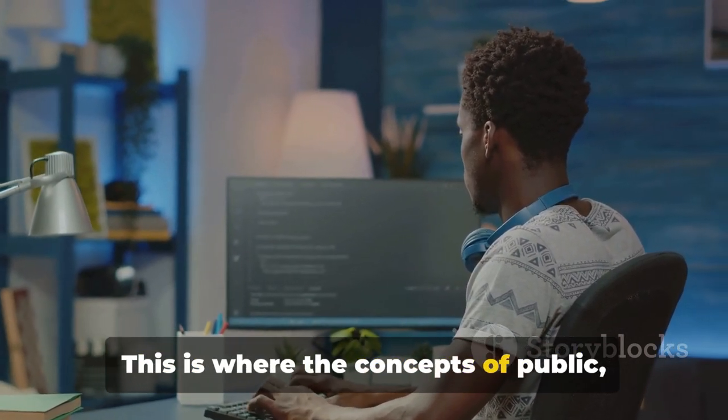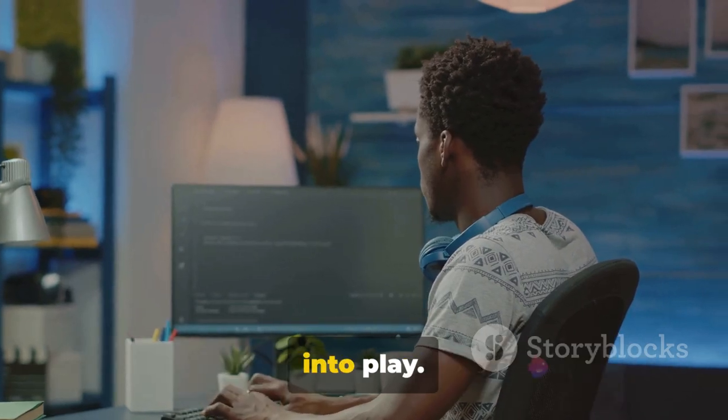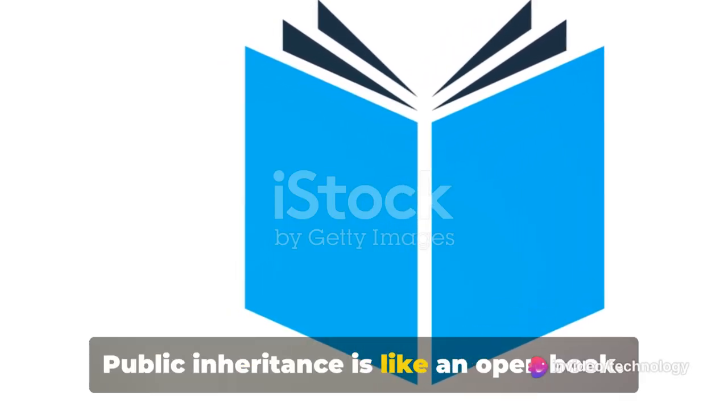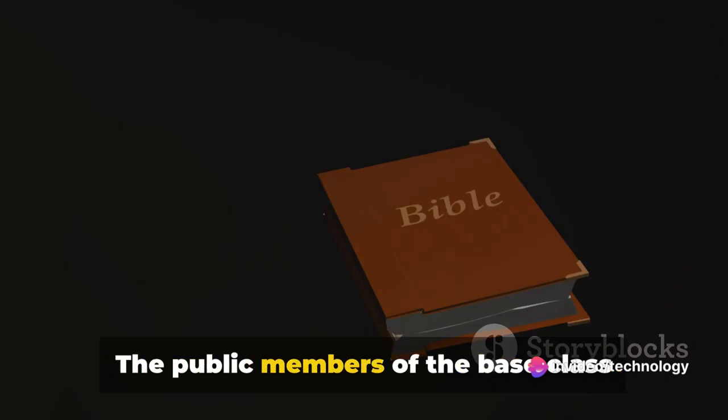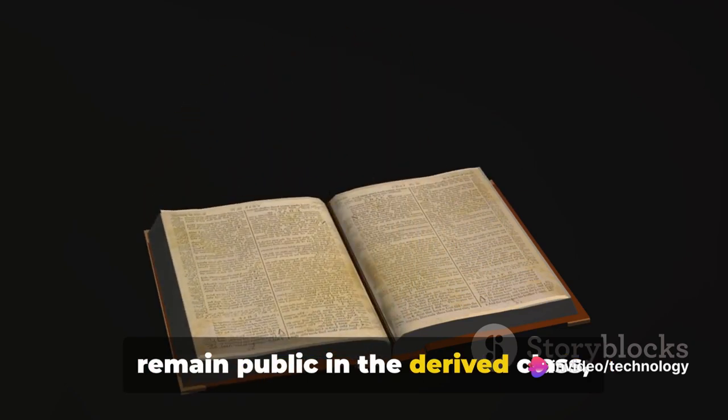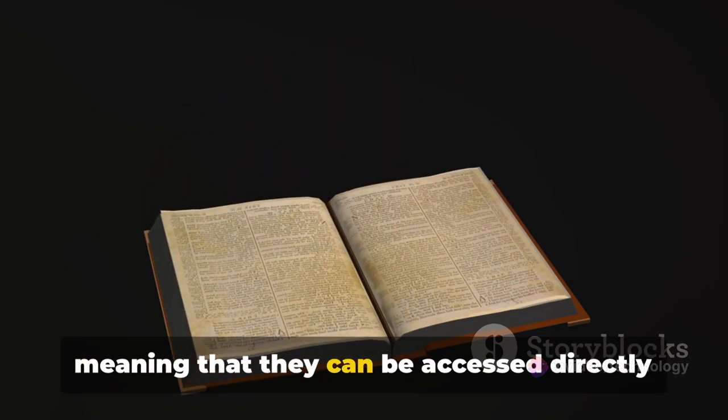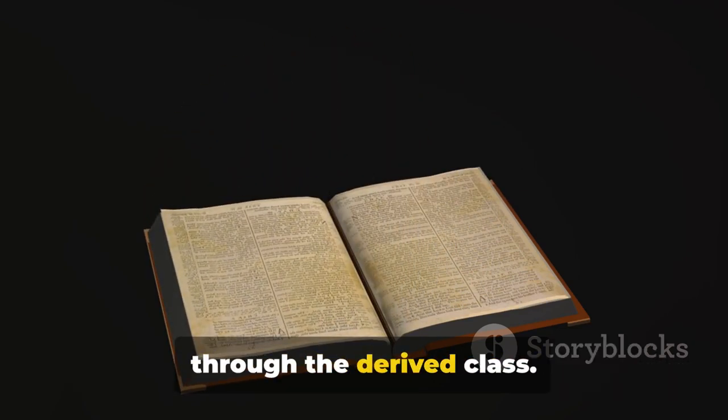This is where the concepts of public, protected and private inheritance come into play. Public inheritance is like an open book. The public members of the base class remain public in the derived class, meaning that they can be accessed directly through the derived class.